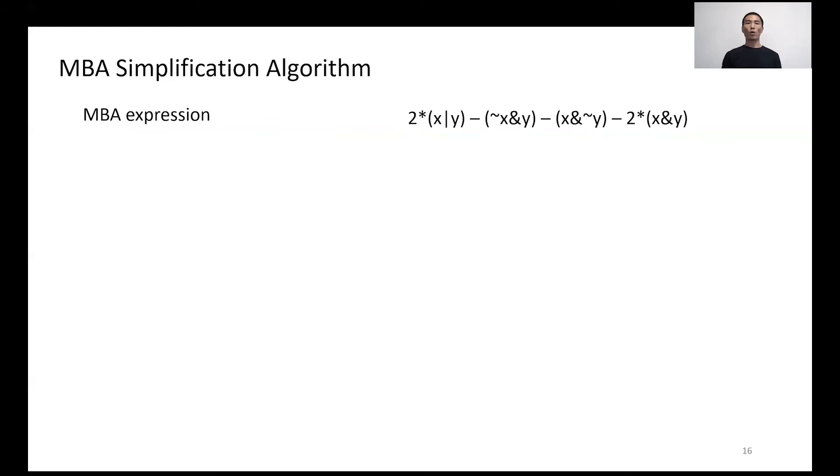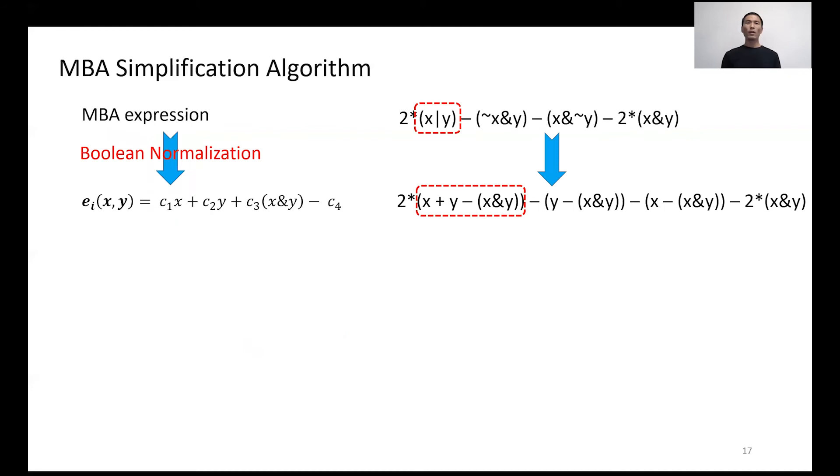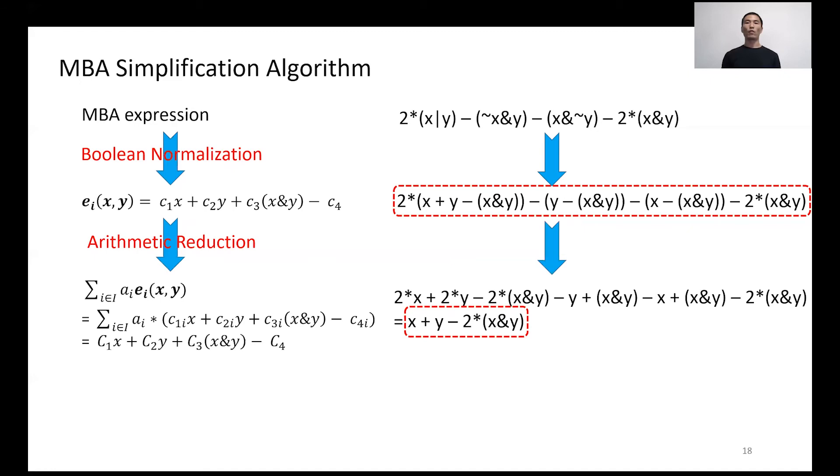The MBA simplification algorithm takes an MBA expression E as input. First, it replaces every bitwise expression with the MBA expression, like X OR Y is replaced by X plus Y minus X AND Y. Then it performs arithmetic reduction to get the normal form. Here, the normal form result is X plus Y minus 2 times X AND Y.